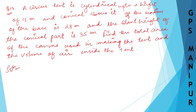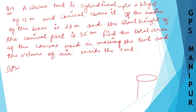A circus stand is cylindrical up to a height of 15 meters. There is a tent in a circus and it is cylindrical up to a certain height, that is 15 meters. So this height is 15 meters. After that it is conical above, like this.